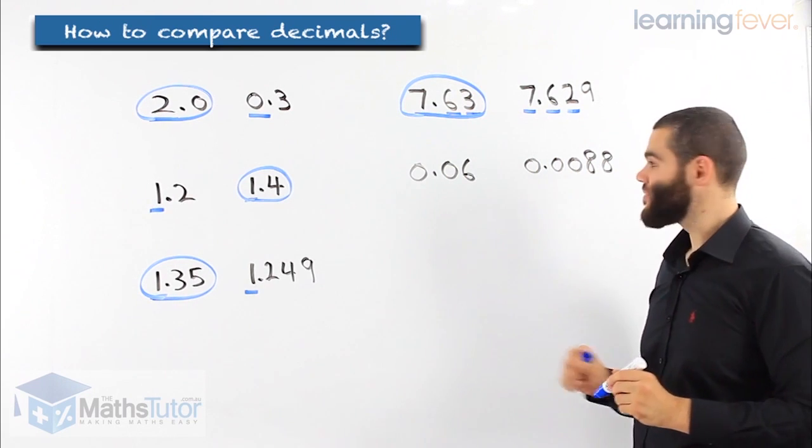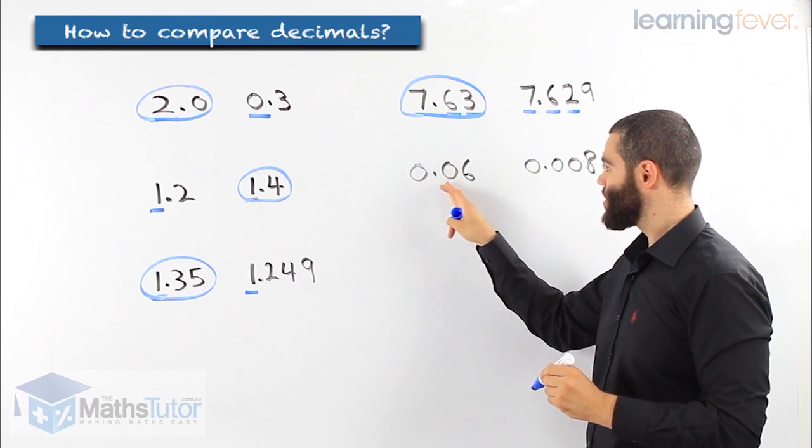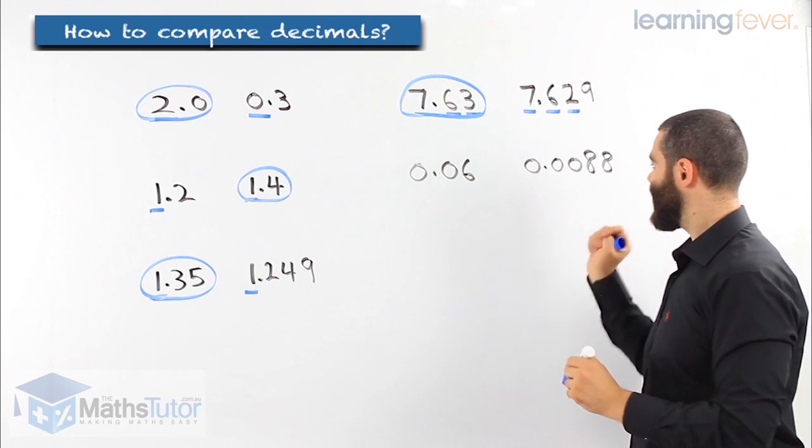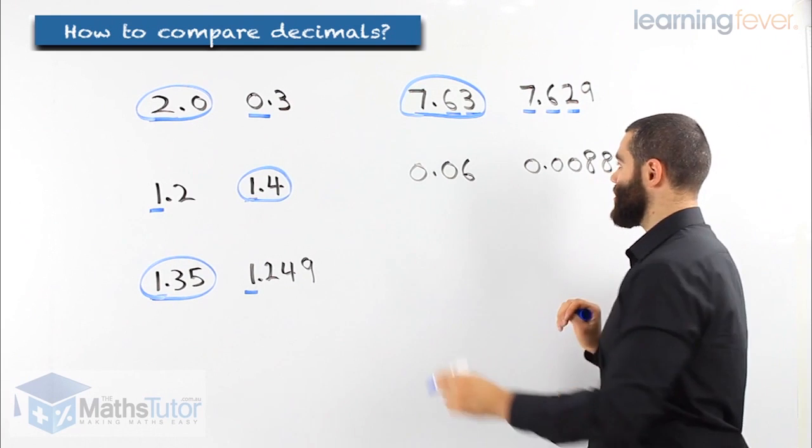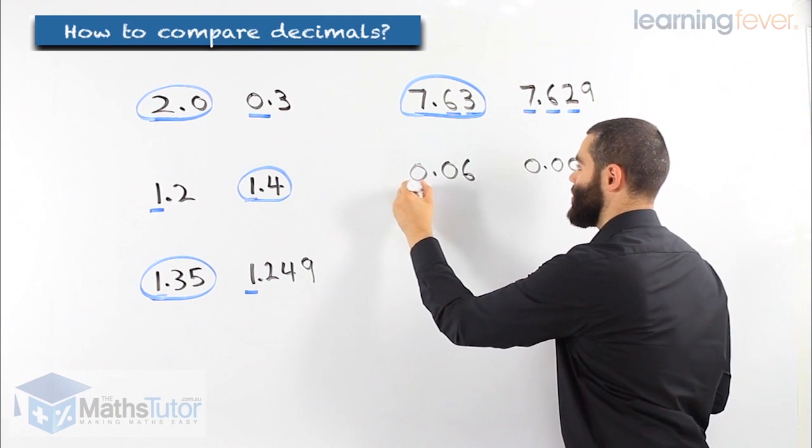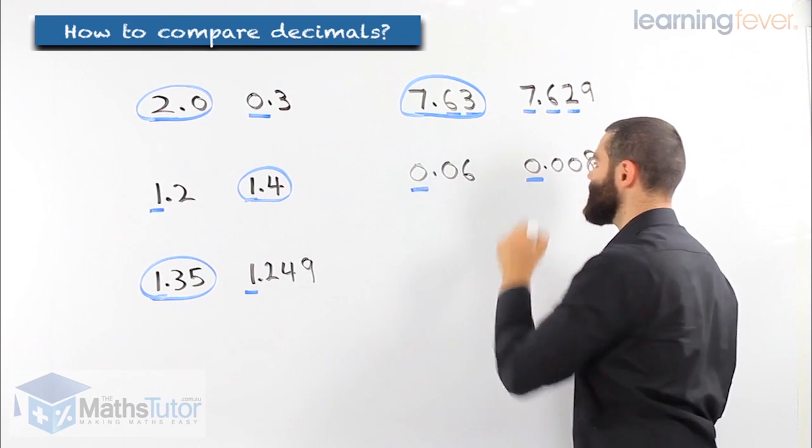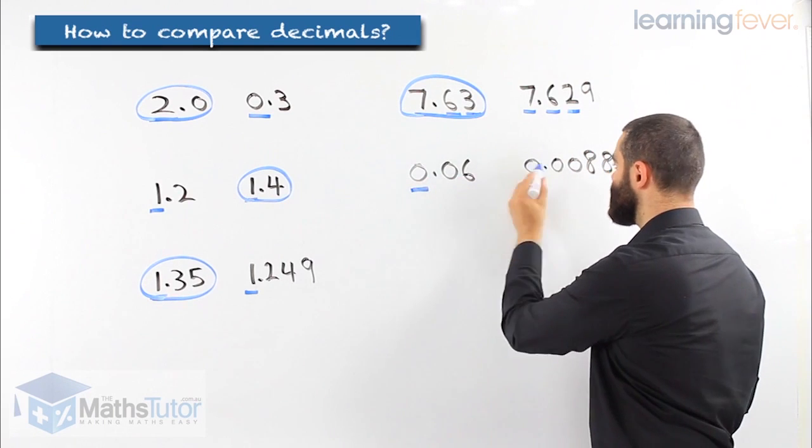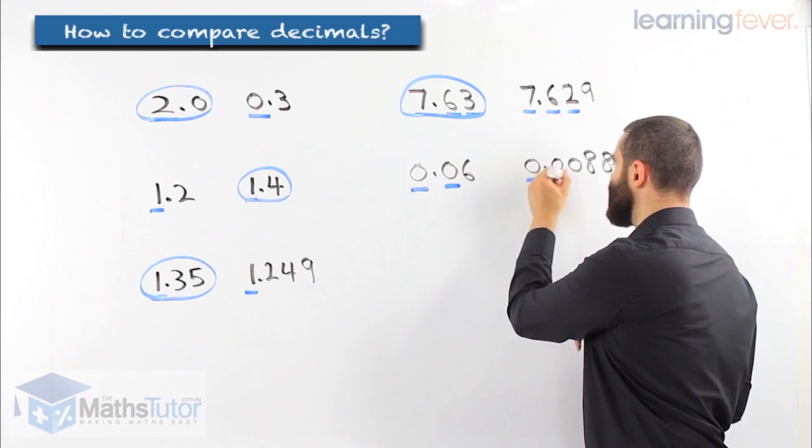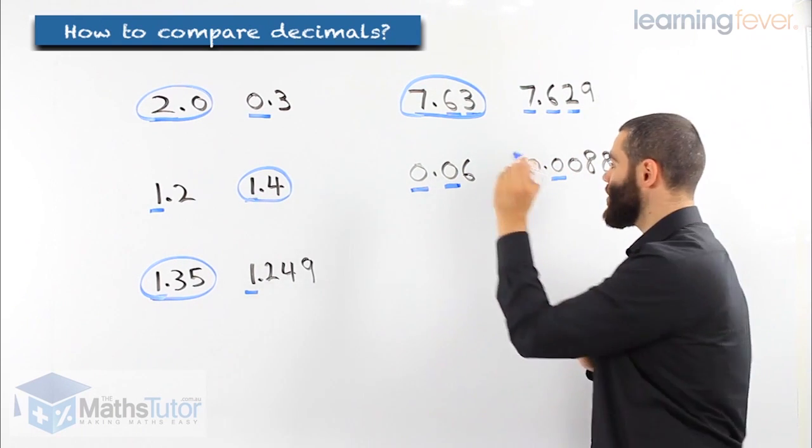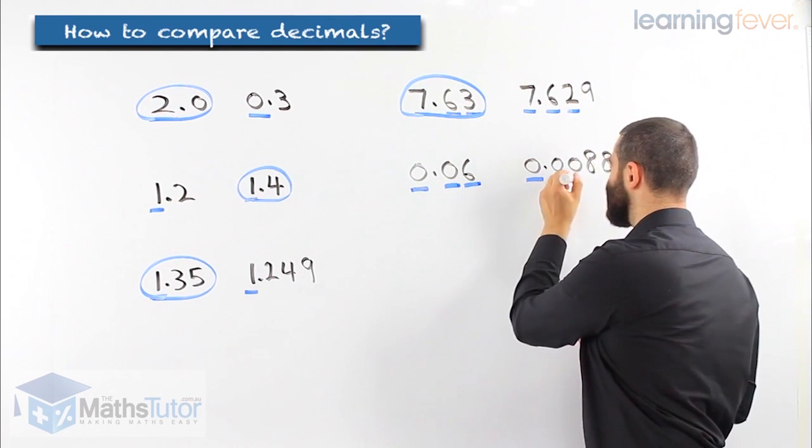Another example. We are comparing 0.06 and 0.0088. Let's go through the place values. The 0 is the same. Point, point. Then we go, compare this 0, compare that 0, they are the same.